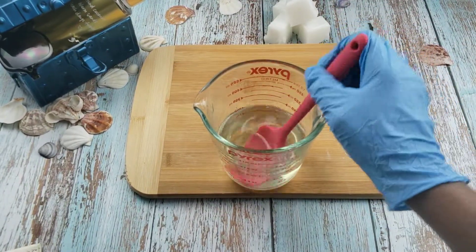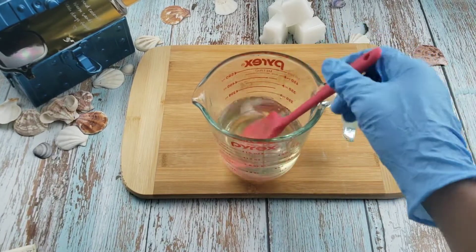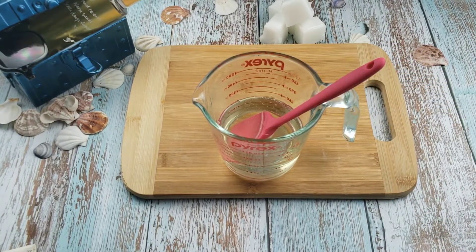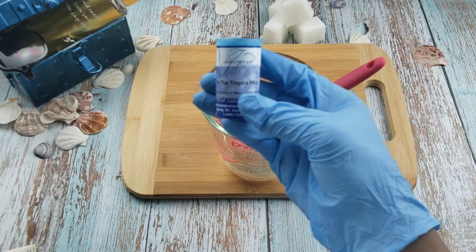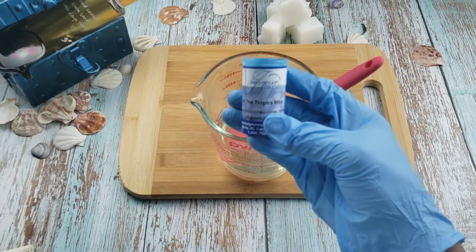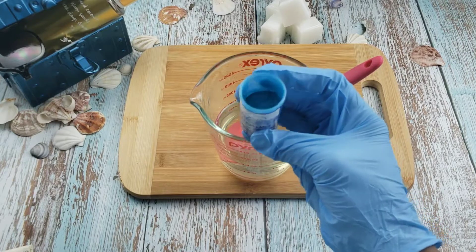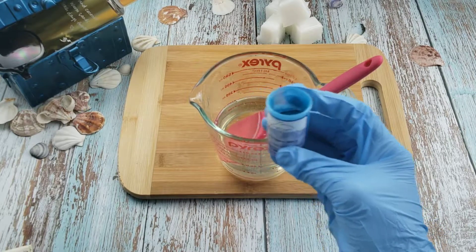Now I'm adding some blue mica into the soap base. This color is appropriately named In the Tropics. I added the mica straight into the soap base and mixed thoroughly to break up any clumps of mica that may have formed.